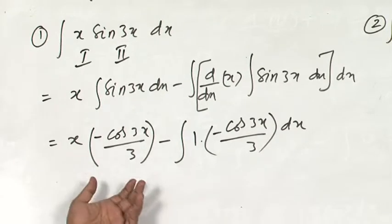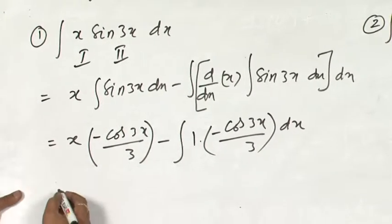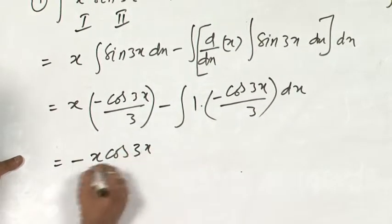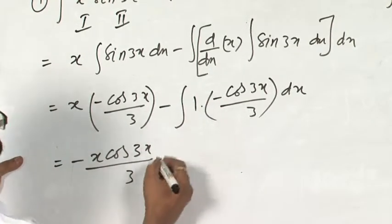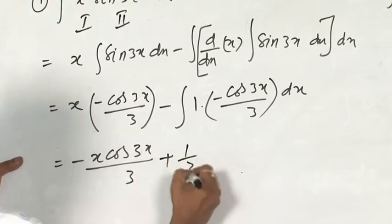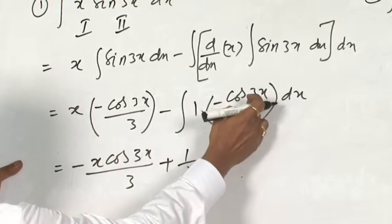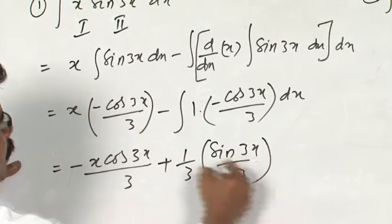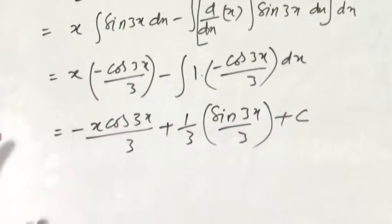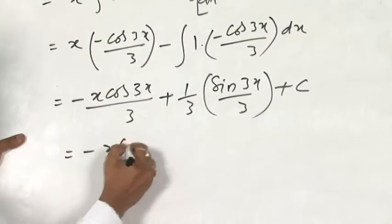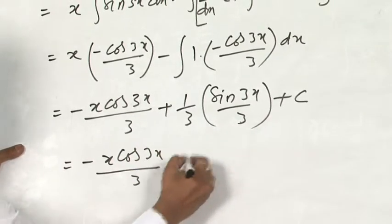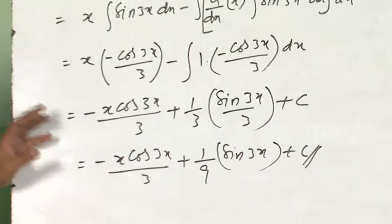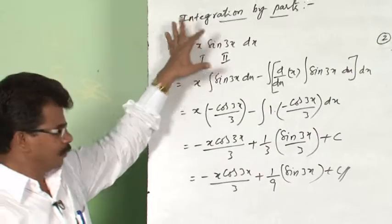This can be written as −x·cos3x/3 plus (1/3)∫cos3x dx. Integration of cos3x is sin3x/3. So the complete solution is −x·cos3x/3 + (1/9)sin3x + C. This is the final answer for ∫x sin3x dx.